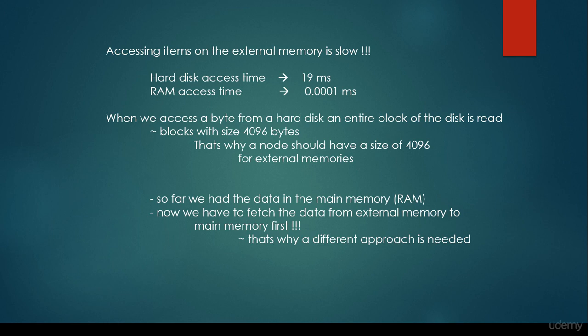So far we had the data in the main memory, in the RAM. Now we have to fetch the data from the external memory to the main memory first, and that's why a different approach is needed. You may have the intuition that we just have to fetch the data, but accessing time for the hard disk is very, very slow — 19 milliseconds on average. So fetching the data from external memory to main memory is very, very slow. We should keep accessing data on the hard disk to a minimum, because this is the bottleneck — the slowest operation possible.